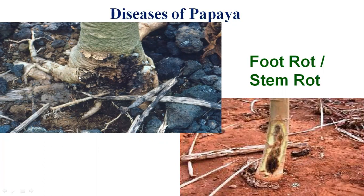When the lower portion of the stem undergoes the process of rotting, that is the foot portion of the plant, it is called foot rot, also known as stem rot. The infection starts from the bottom — from the soil — and multiplies in the vascular tissue. If you scrape the upper layer of the stem, you can see internal brownish or blackish discoloration of the vascular tissue, indicating the presence of the pathogen inside.